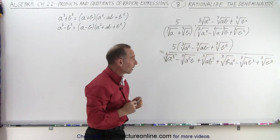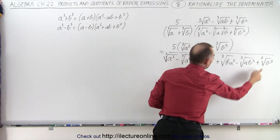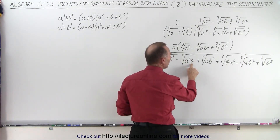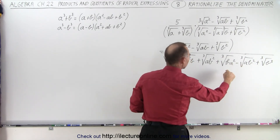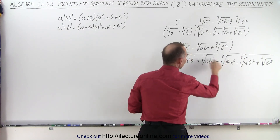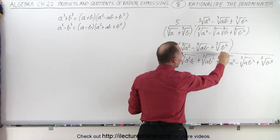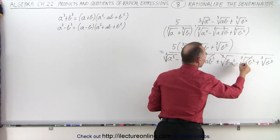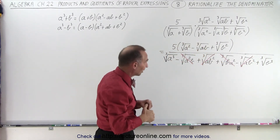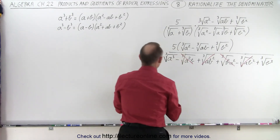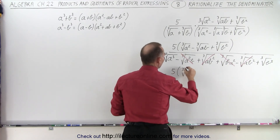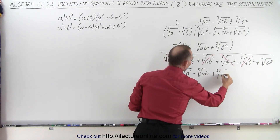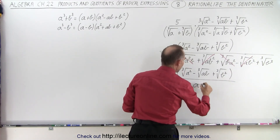Now let's see what our denominator looks like. The cube root of a cubed becomes a, and the cube root of b cubed becomes b. Notice — highlighted in red — we have minus the cube root of a squared b and plus the cube root of a squared b: those cancel. And the cube root of ab squared minus the cube root of ab squared: those cancel too. We're left with just the first and last terms, which is simply a plus b. So the whole expression becomes five times the cube root of a squared minus the cube root of ab plus the cube root of b squared, all divided by a plus b.